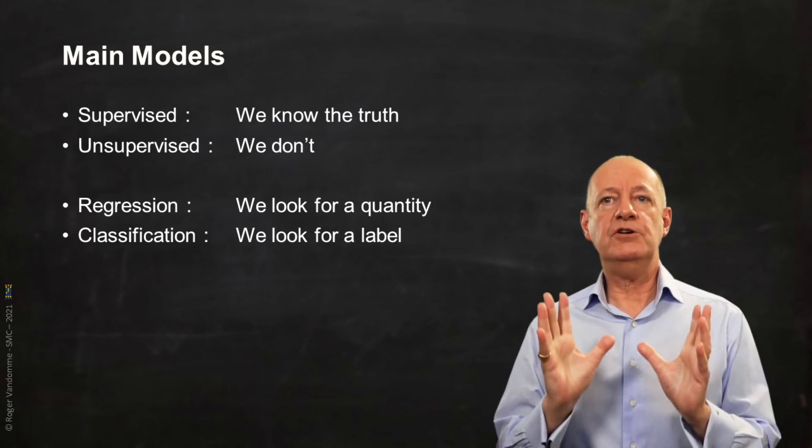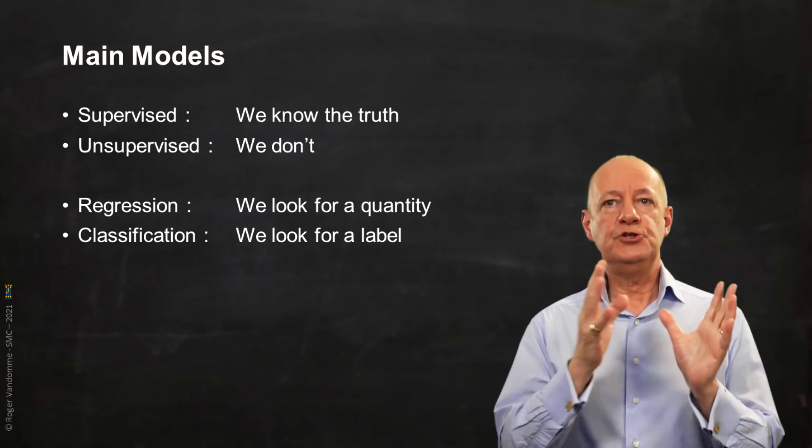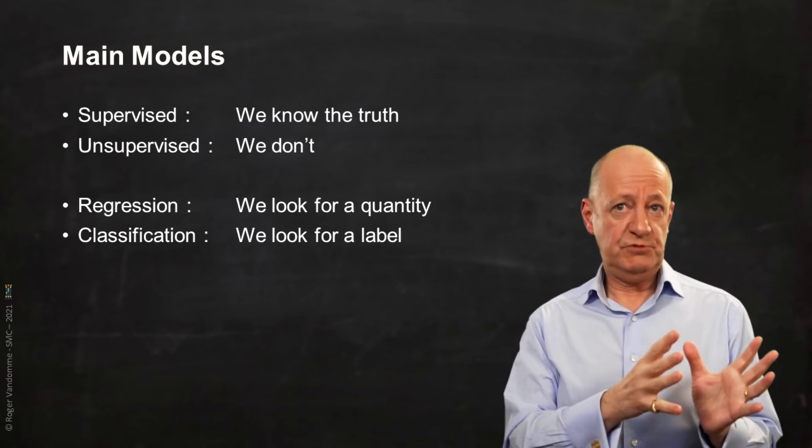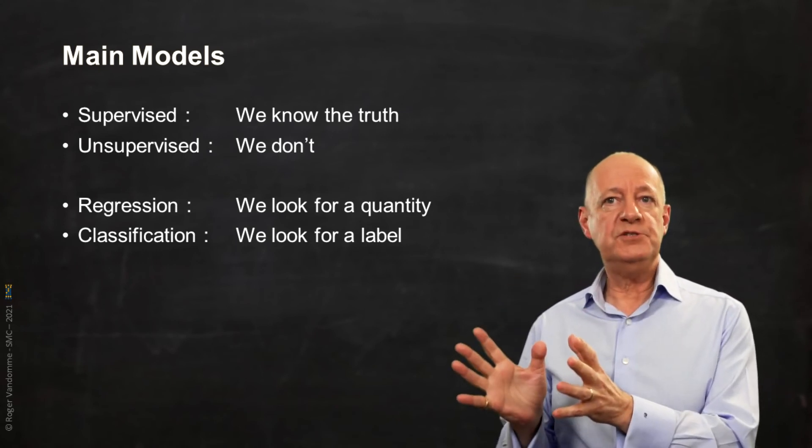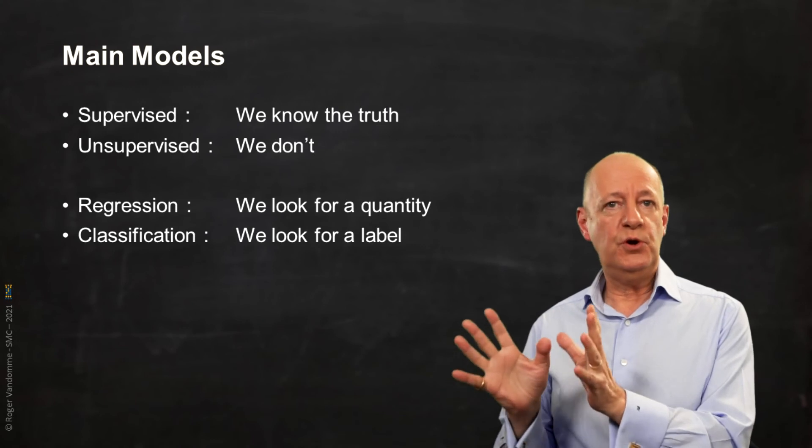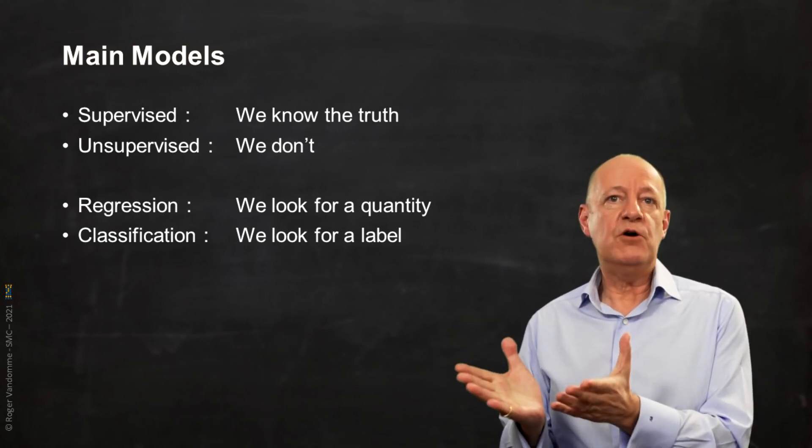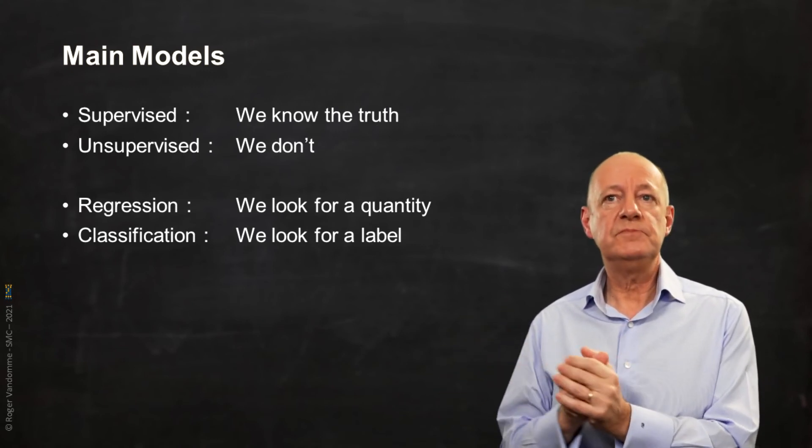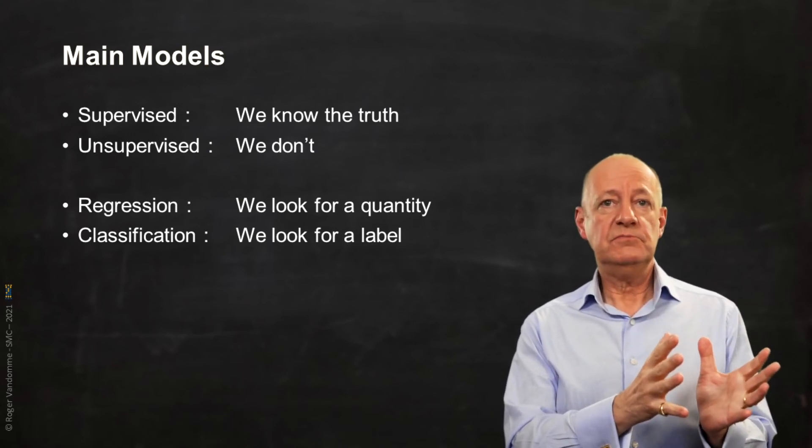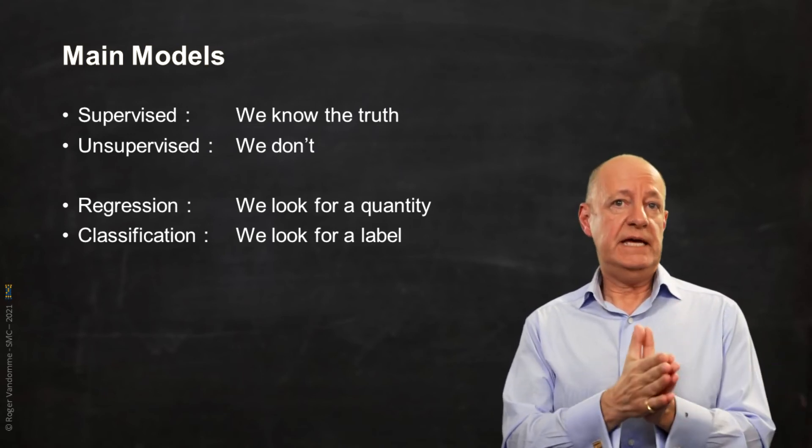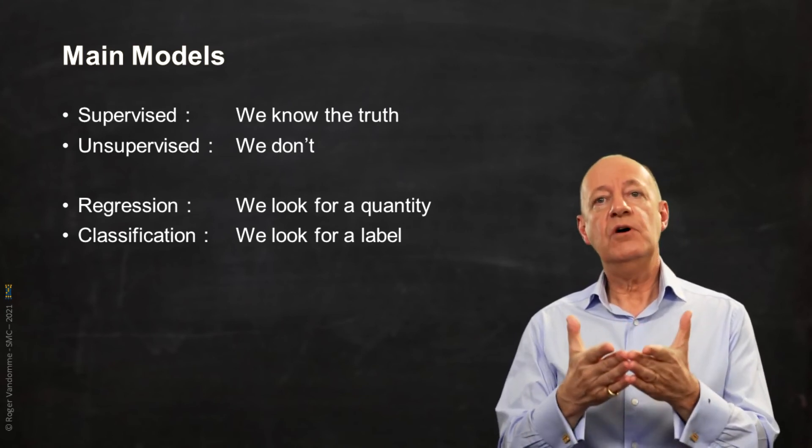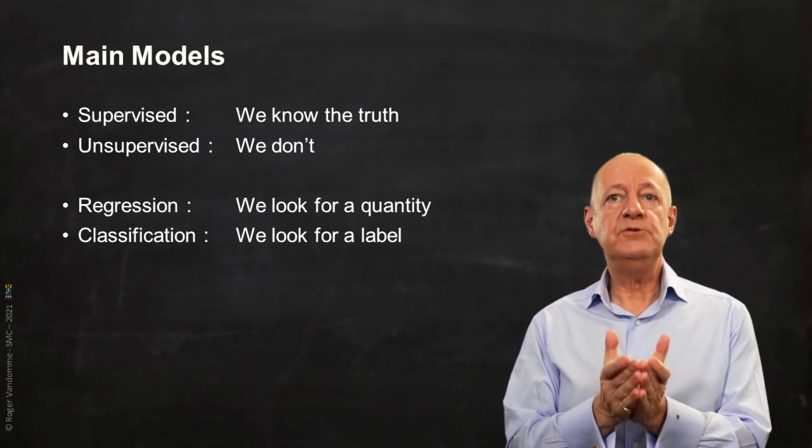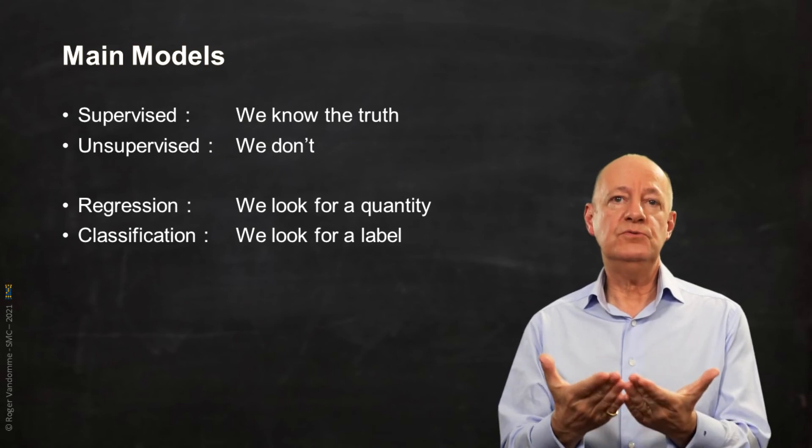So we have four large types of models. Supervised models for which we have a known truth, a learning reference. Unsupervised models for which there is no learning reference. These are often segmentation models. And in supervised models, regression models that aim to predict a dimension, a number, and classification models or classifiers that calculate the probability of belonging to a class.